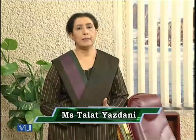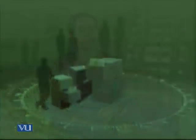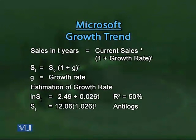To estimate the growth model, we find the log-linear form by transforming it: taking logs of both sides gives log(ST) = log(S0) + T × log(1 + G). This means we take the logs of the sales data and run the regression. The result is: log(ST) = 2.49 + 0.026T. The R-squared value is again 0.50.